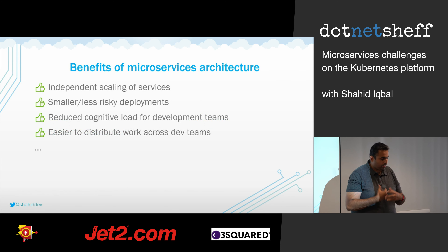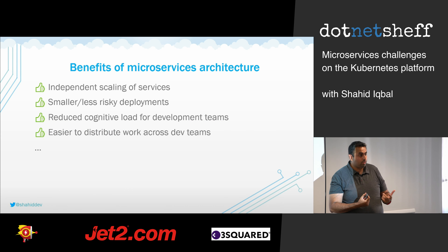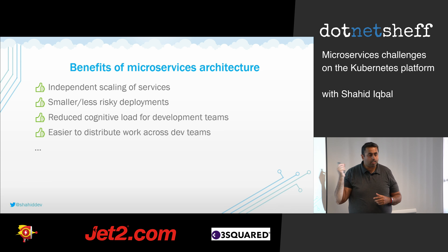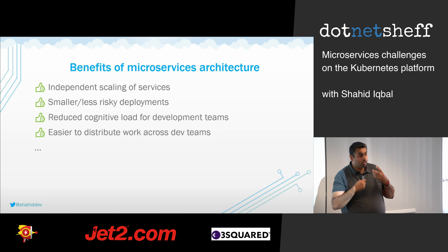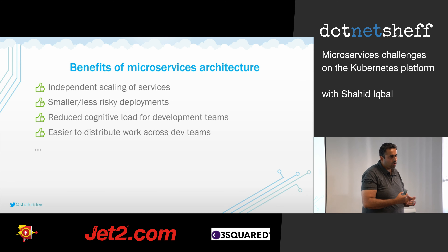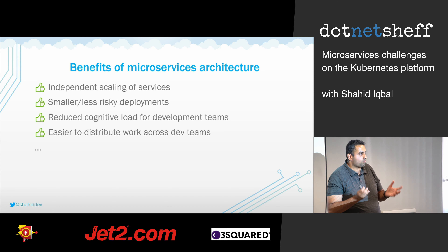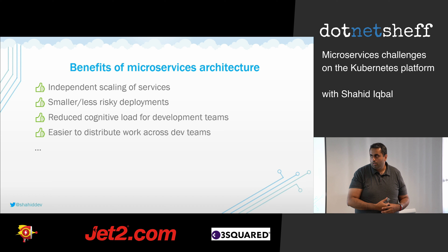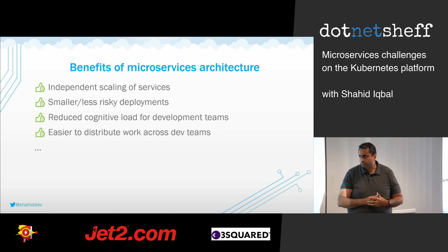The benefits of microservices include independently scaling the services, and each deployment is now smaller so it should be less risky. Another benefit that often gets overlooked is cognitive load — if you're working on a complex system without microservices, you have to have the whole system in your head. With microservices, you've got a really clear boundary: this is the API surface of this microservice, and that's as far as you need to consider. And obviously we can distribute work across other teams as well.